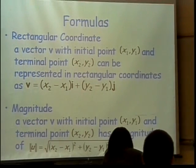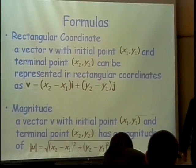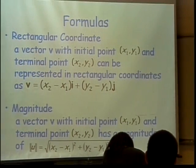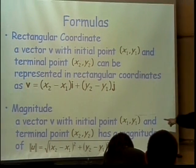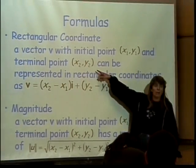Now, that magnitude formula is the one that is given in the book. But, it's kind of misleading, because most of the time when you are asked to find the magnitude of the vector, you are not going to have the initial point and the terminal point.